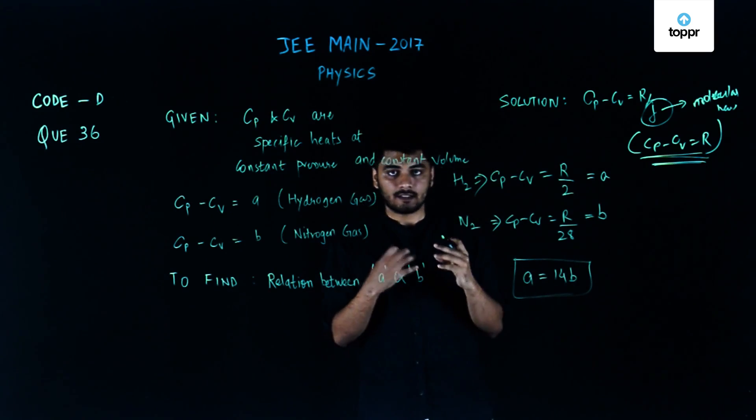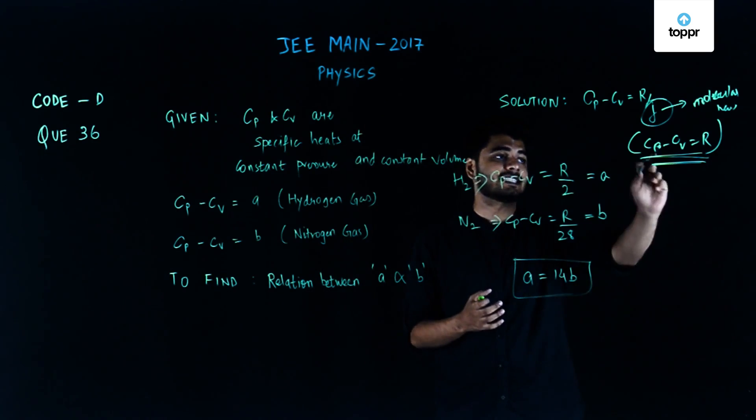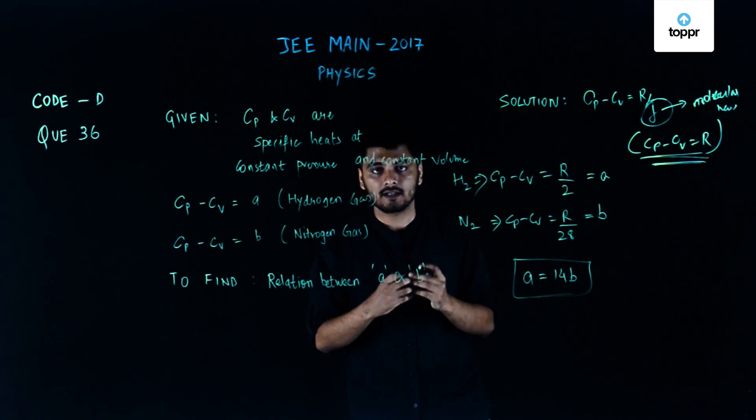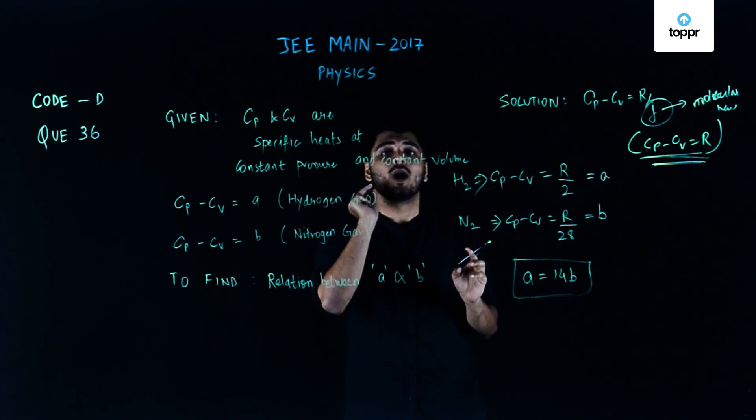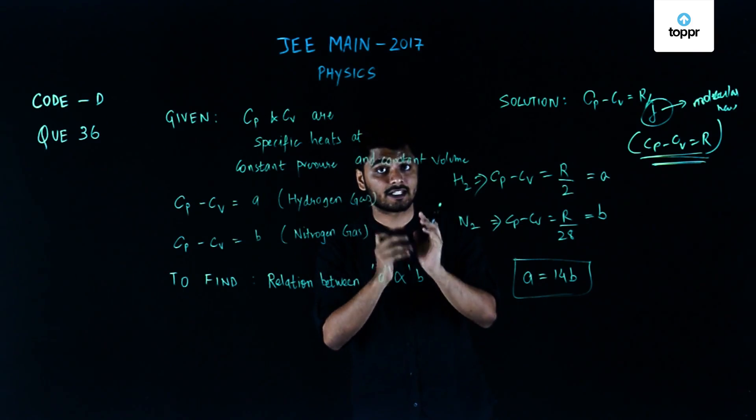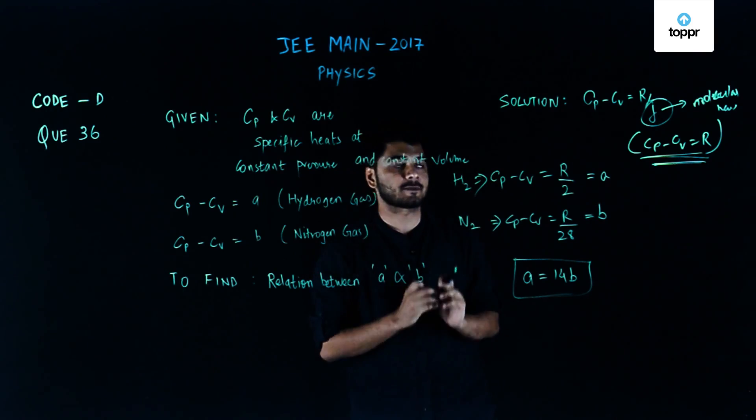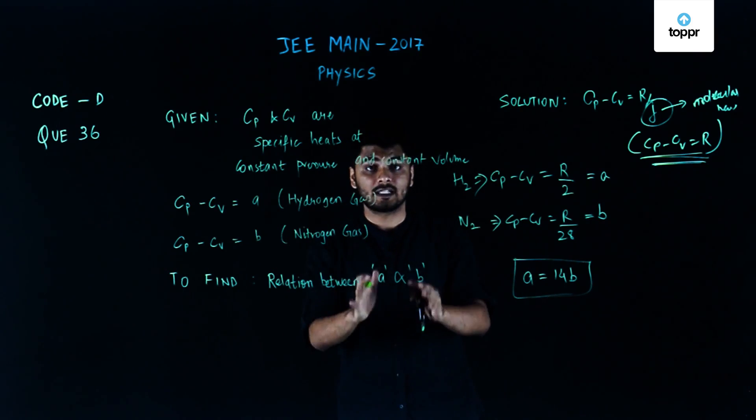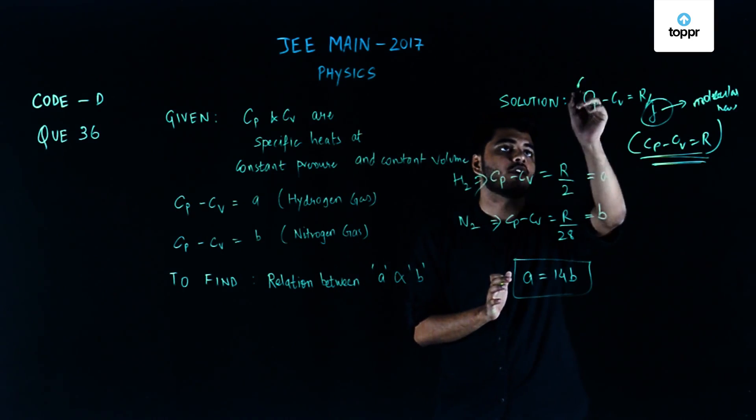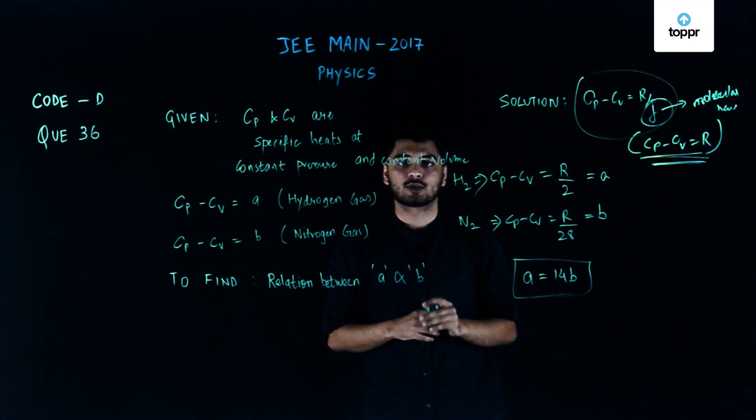The trick that must be remembered is that Cp minus Cv equals R is valid as long as there is only one gas under consideration. As the gases change, as there are two gases involved in a question, we must use the formula Cp minus Cv equals R by J.